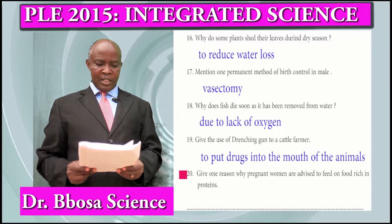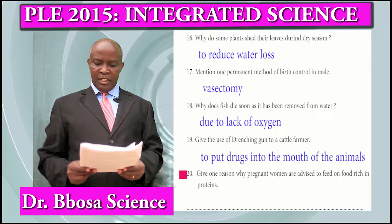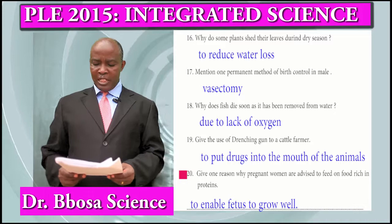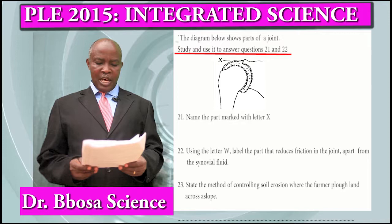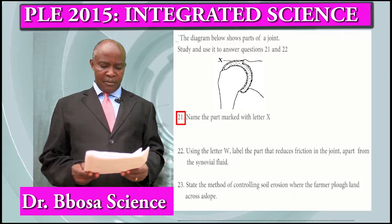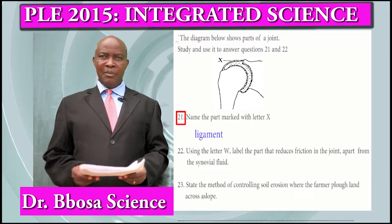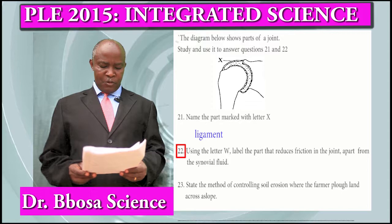Question 20: Give one reason why pregnant women are advised to feed on food rich in proteins. To enable the fetus to grow well. The diagram below shows parts of a joint. Question 21: Name the part marked X. That is a ligament. A ligament connects a bone to a bone.